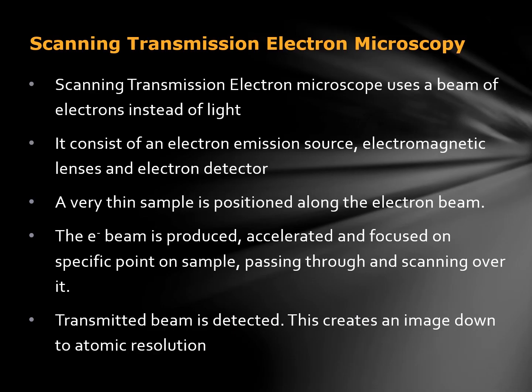Scanning Transmission Electron Microscopy uses a beam of electrons instead of light. It consists of an electron emission source, electromagnetic lenses, and an electron detector. A very thin sample is positioned along the electron beam. The electron beam is produced, accelerated, and focused on specific points on samples, passing through and scanning over it. The transmitted beam is then detected and this creates the image down to atomic resolution.